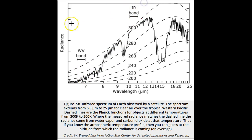Thus the radiance gives us the object's temperature, and since we have a rough idea about the temperature profile of the atmosphere, we can make a pretty good guess at the height of the radiating object and what is actually radiating — whether it be Earth's surface or a gas like water vapor, carbon dioxide, or ozone.